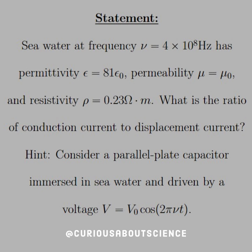seawater at a frequency of nu equal 4 times 10 to the 8 hertz has a permittivity epsilon equal 81 epsilon naught, permeability mu equal mu naught, and resistivity rho equals 0.23 ohm meter. What is the ratio of the conduction current to displacement current?